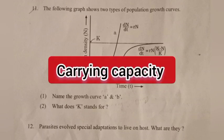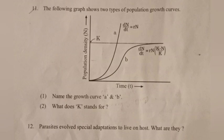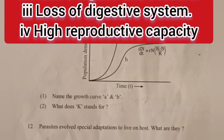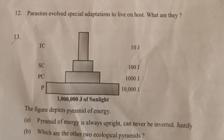Question 12: Parasites have evolved special adaptations to live on the host. What are they? Answer: 1) Loss of unnecessary sense organs. 2) Presence of hooks, adhesive organs, and suckers. 3) Loss of digestive system. 4) High reproductive capacity.